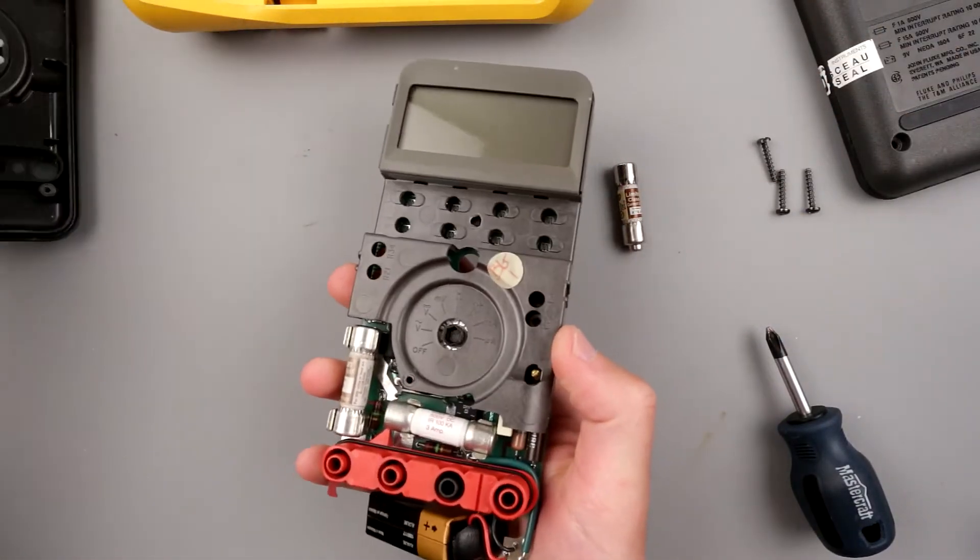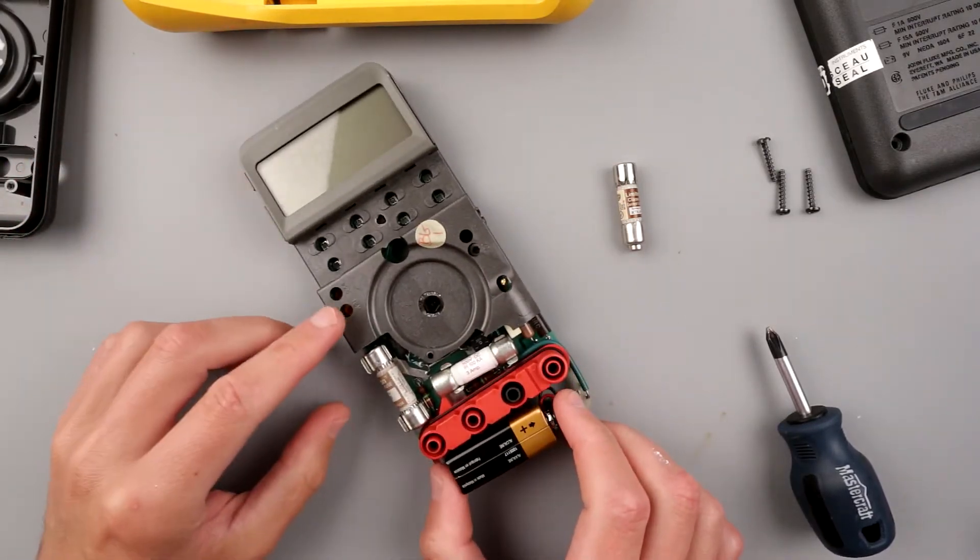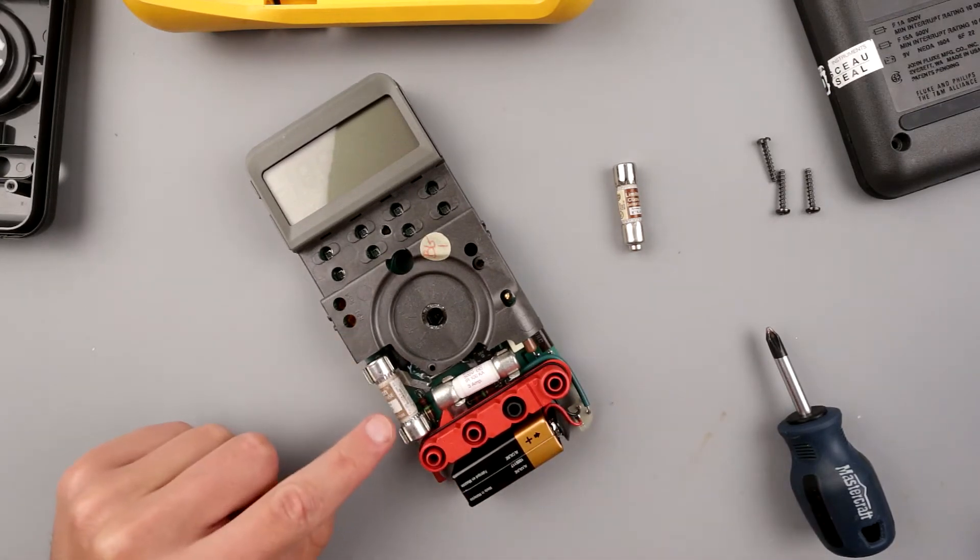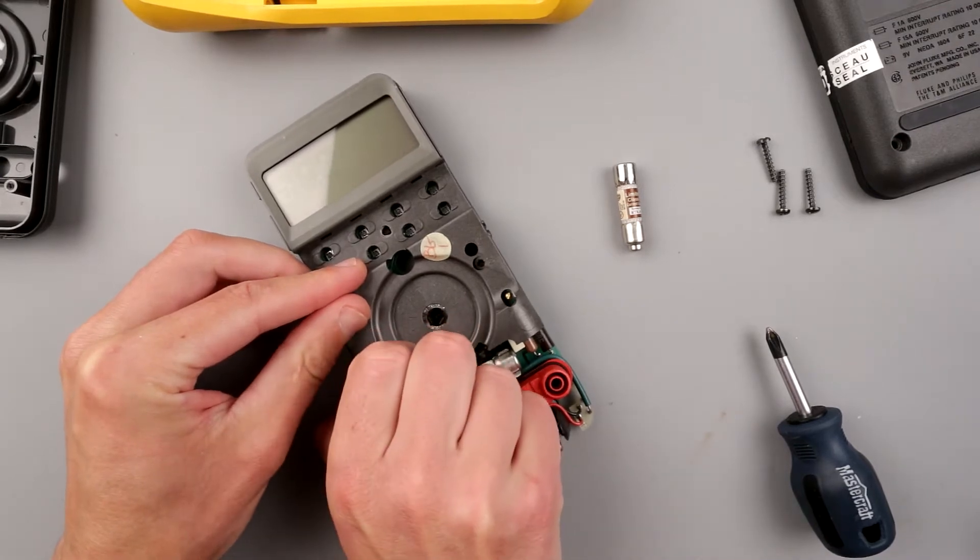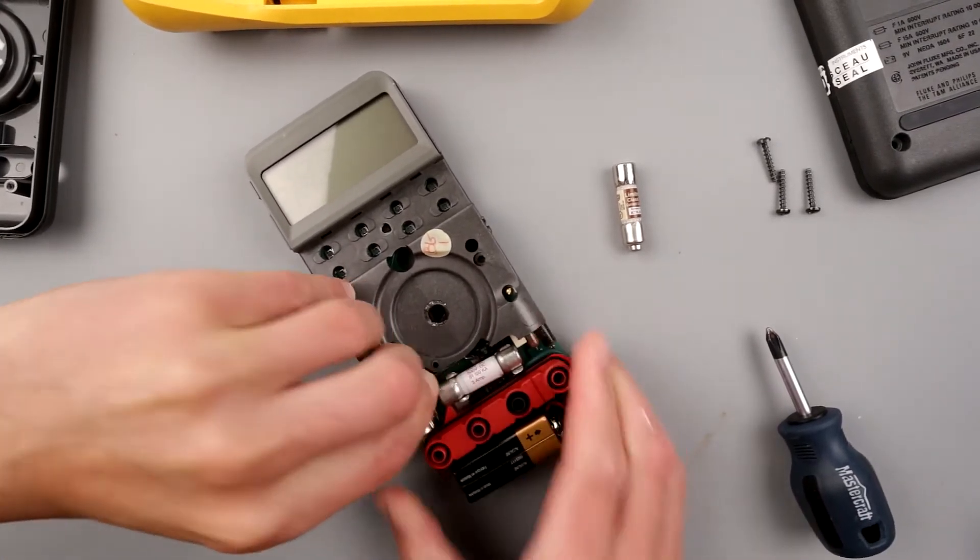In order to replace the fuse in this particular model you have to disassemble it pretty much. So this is the thing, this is an older model, it's Fluke 87, and here is the 15 amp fuse.